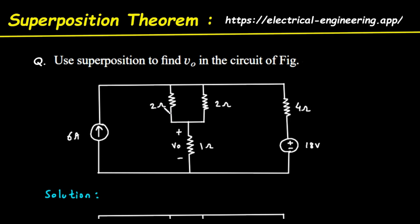Hello and welcome. In this video, we're going to solve a circuit problem step by step. Our goal is to find the voltage labeled V0 in the circuit diagram you see on the screen. We'll be using a powerful technique called the superposition theorem. If you're new to circuit analysis, I'm going to break down every single step in great detail so you can follow along easily.